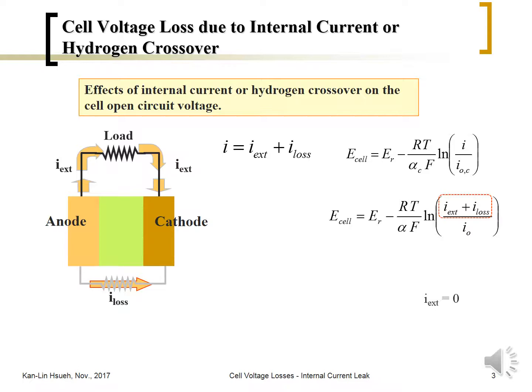So the cell voltage at open circuit voltage, when the external current equals zero, this means even when we use a voltmeter to measure the cell voltage when there's no current flowing through, the cell voltage was lower than it's supposed to be, lower than the equilibrium potential.